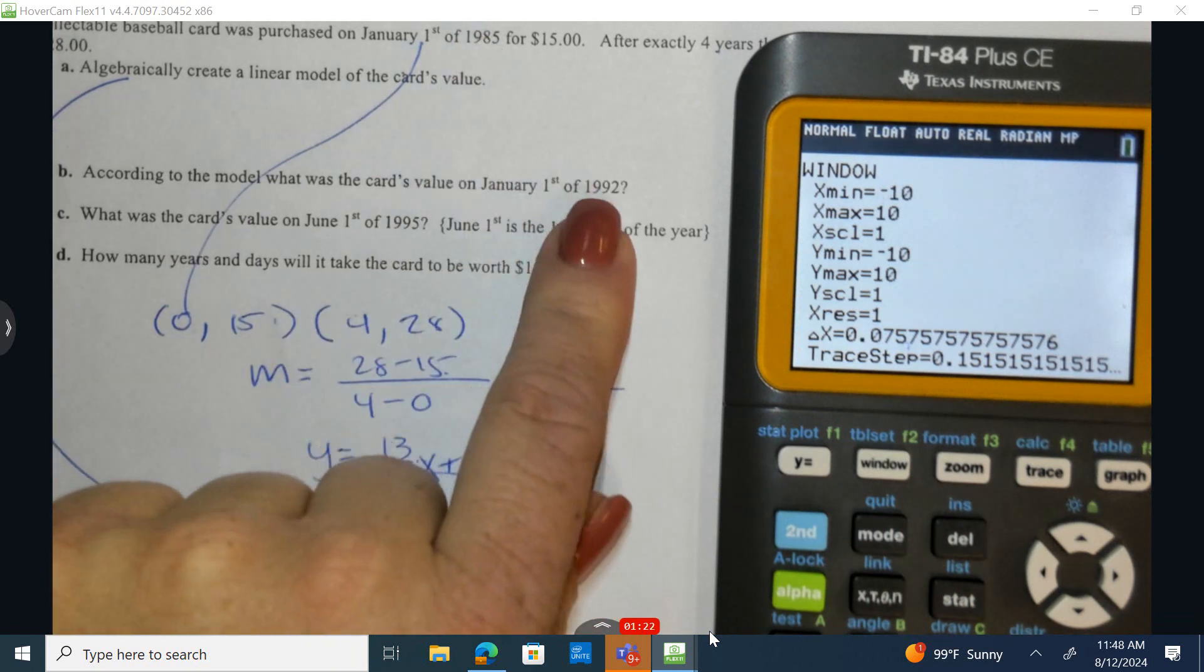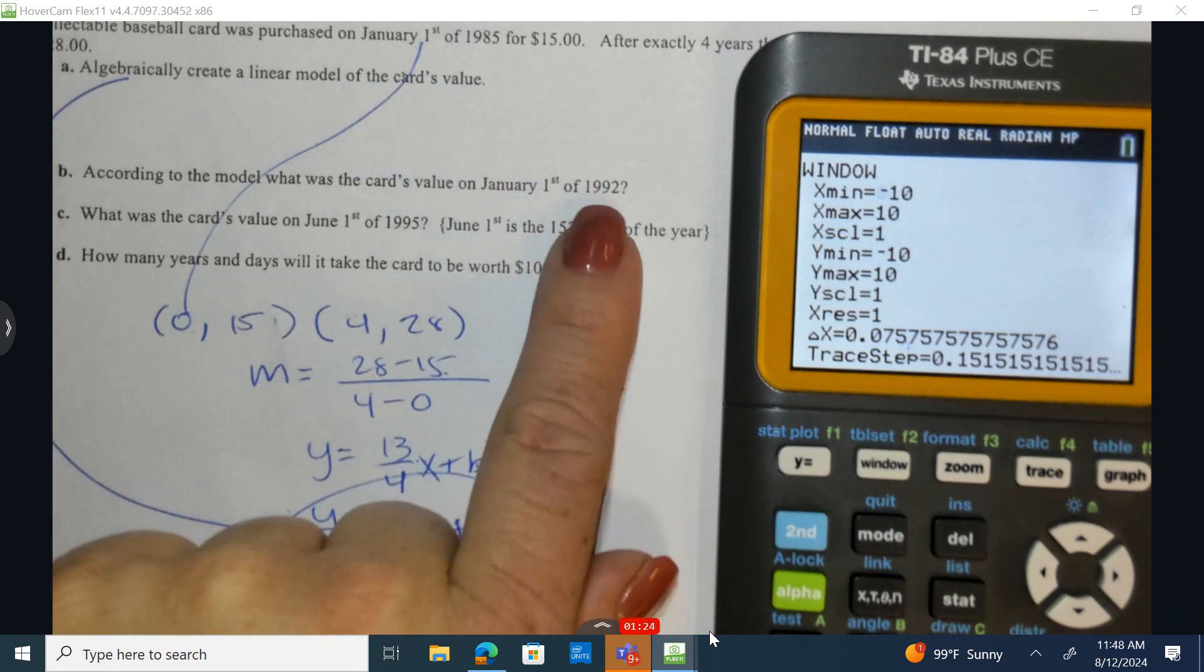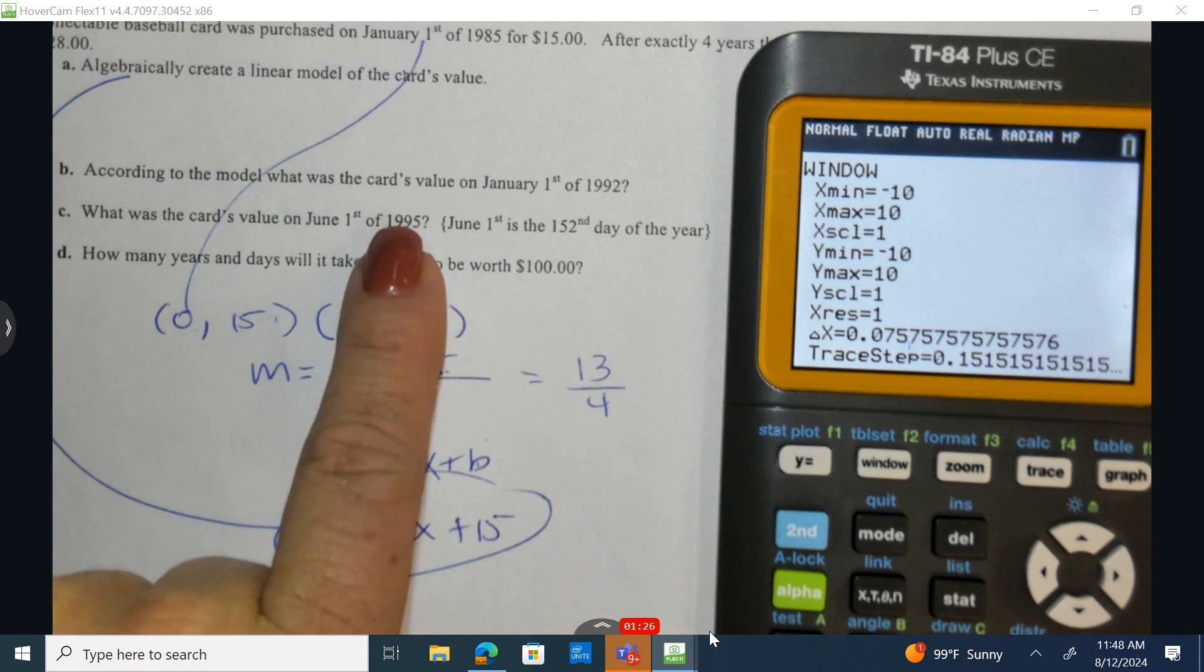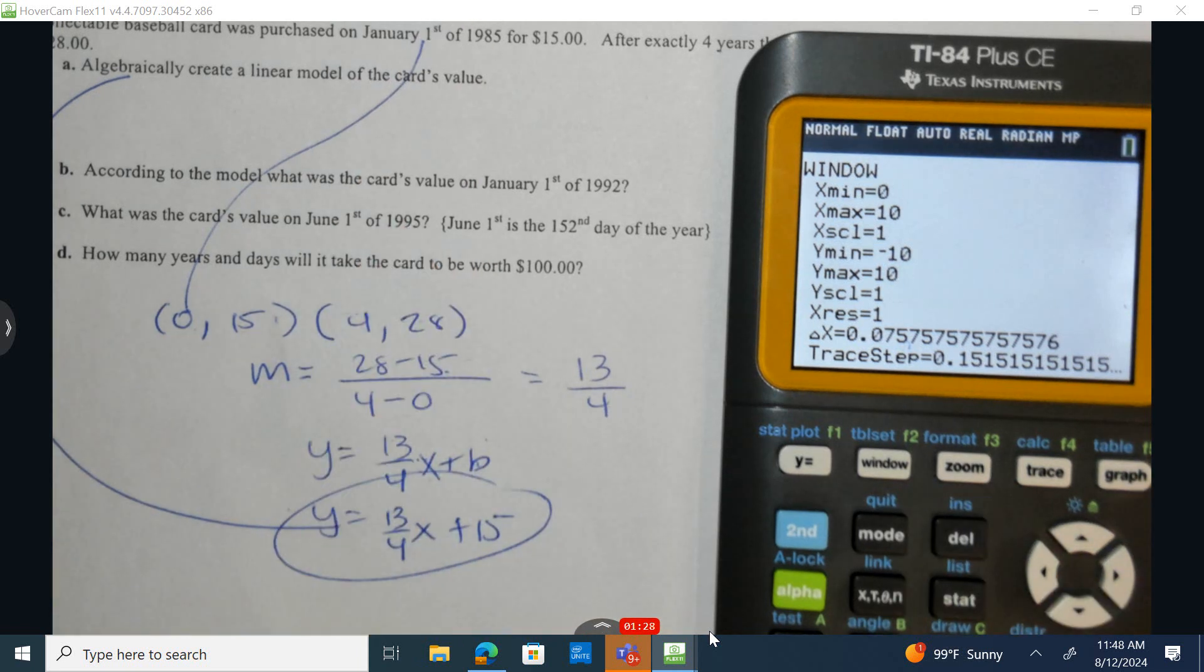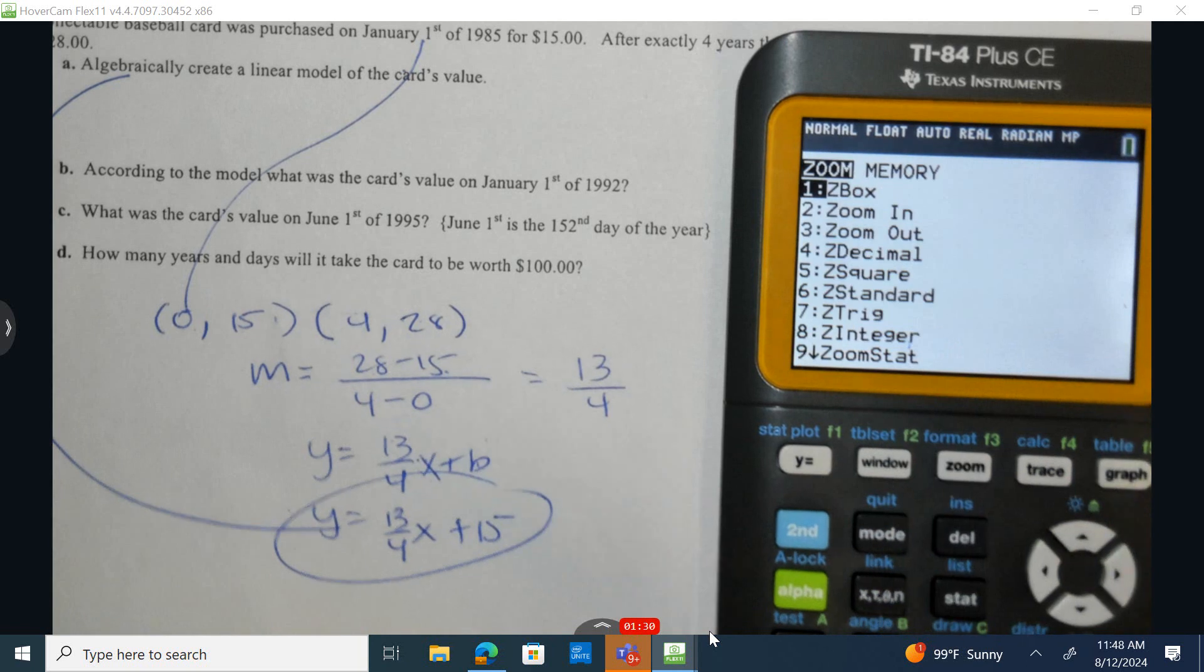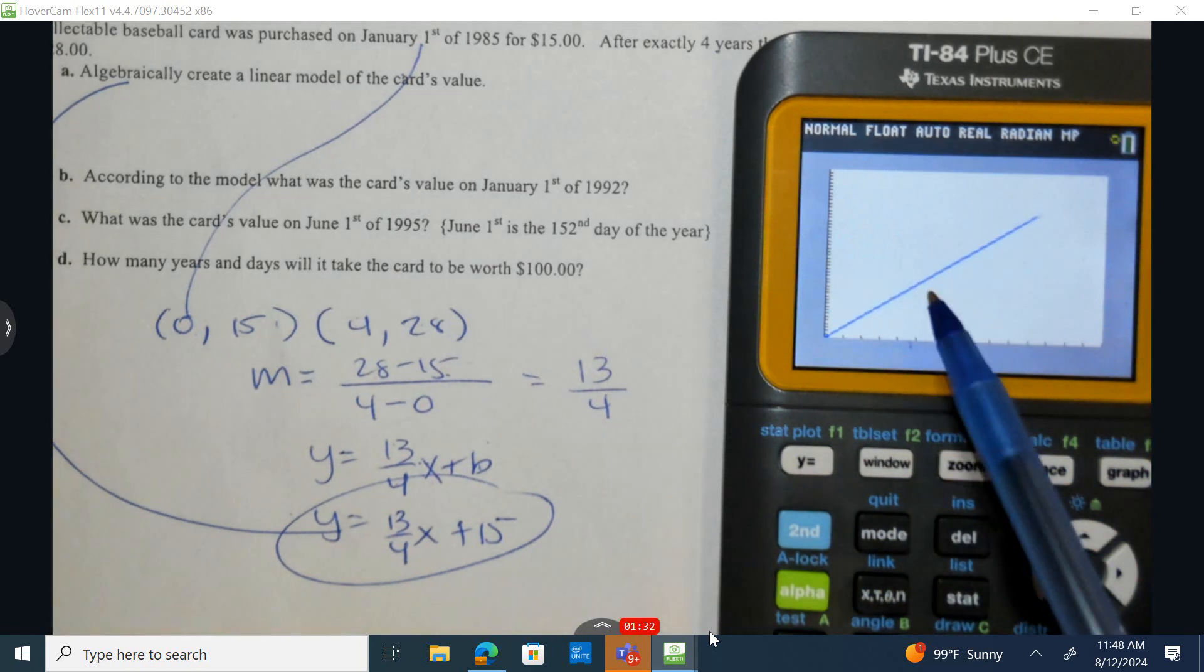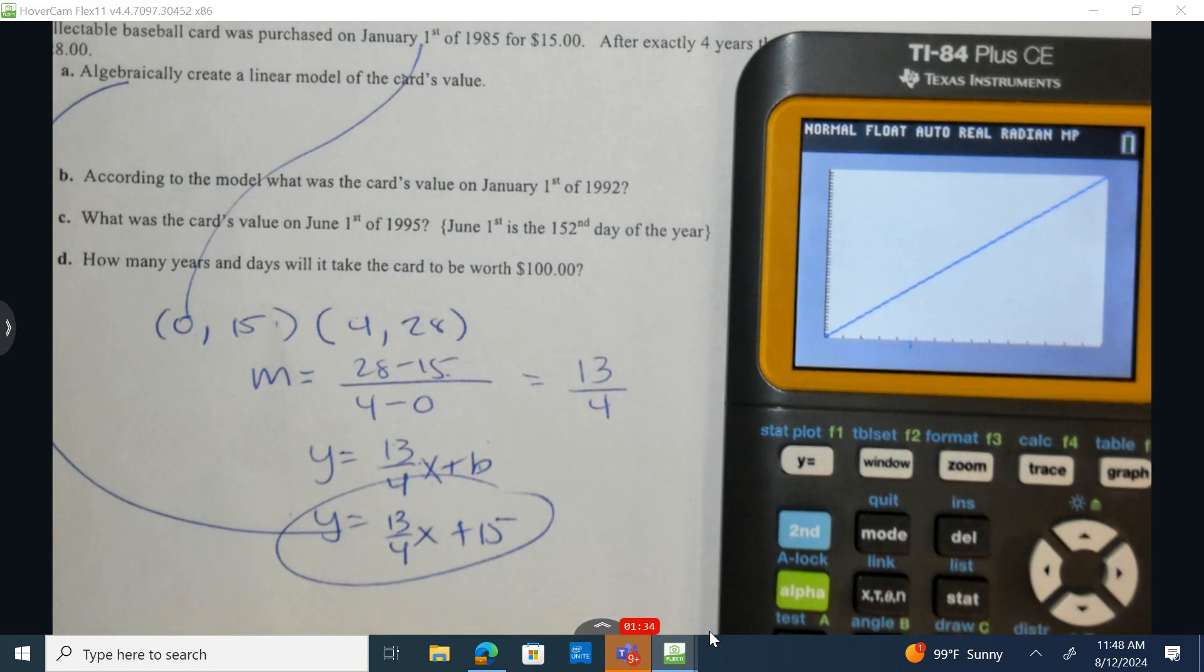So we can see this is a difference right here of 7. This is a difference of 10. Let's go all the way out to 15 and do a zoom fit. So this is going to be our value of our card at any given point.